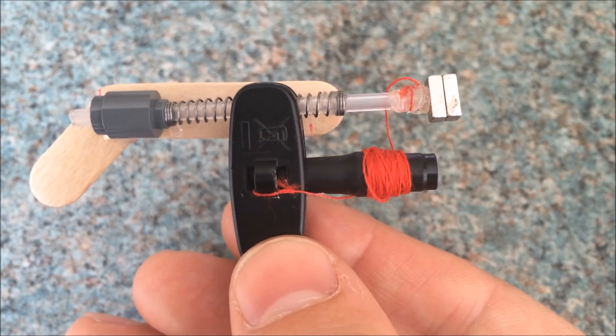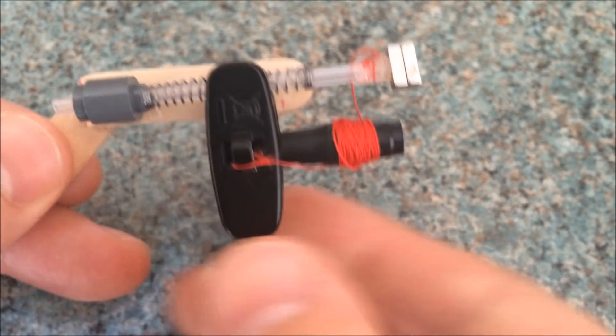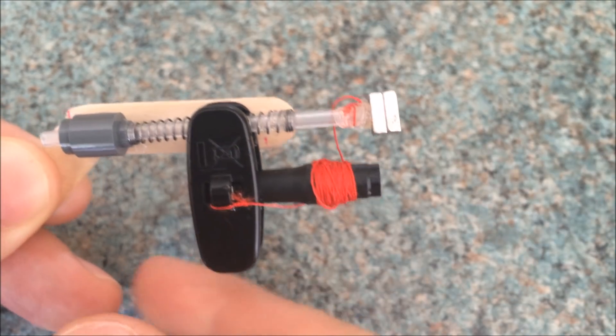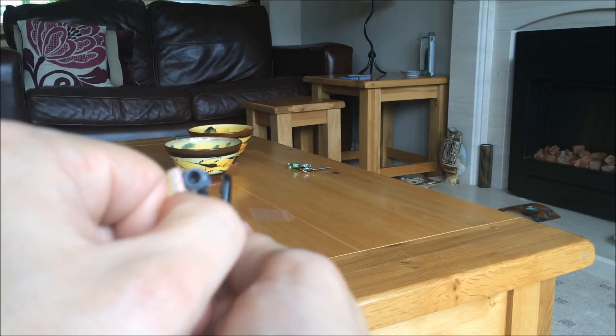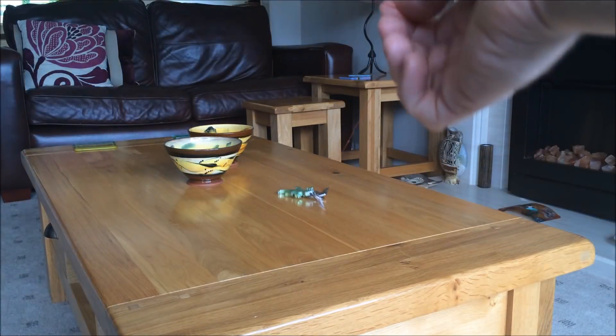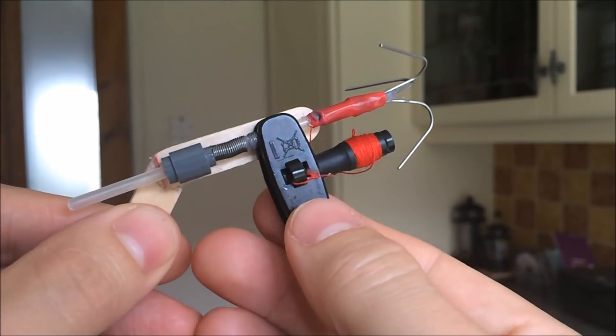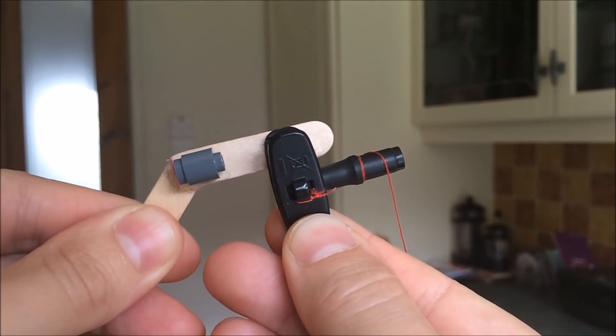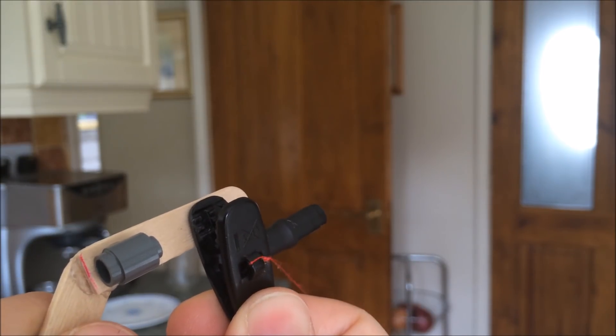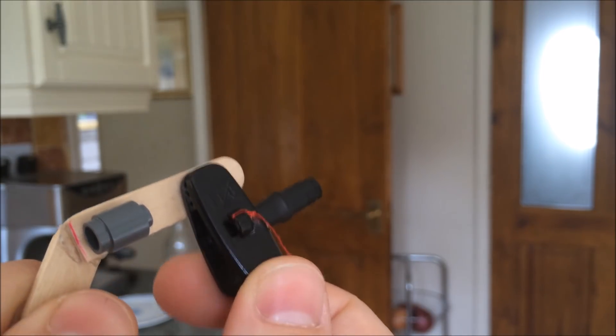And if you've got a bad shot, you can always replace the grapple with these mini neodymium magnets. Simple. So there we have it, a mini grappling gun. I'll see you next time.